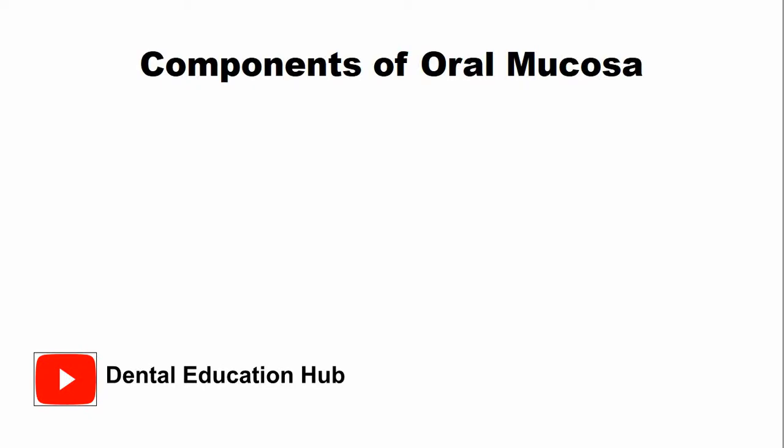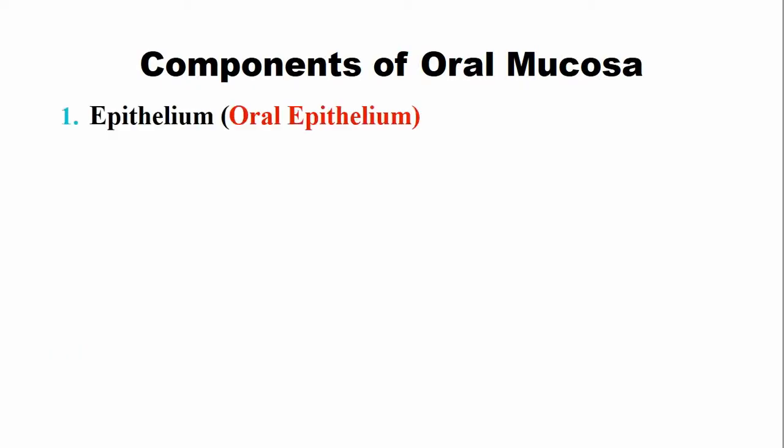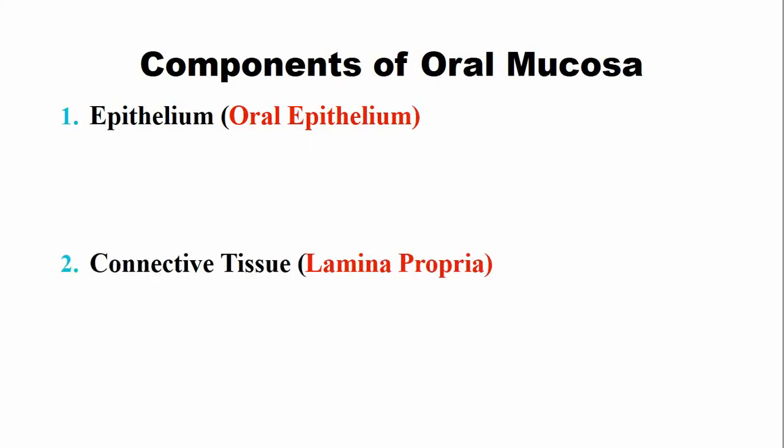There are two components of oral mucosa. One is the epithelium, which is also known as the oral epithelium, and the second component of the oral mucosa is the connective tissue, which is also referred to as the lamina propria.